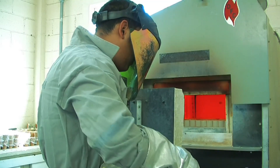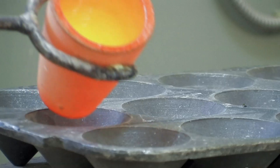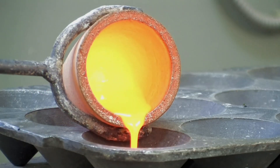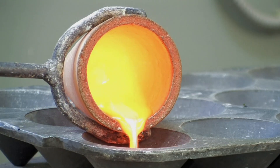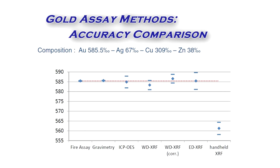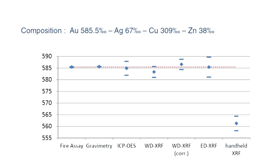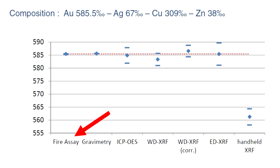Fire assay is the standard and classical analysis technique used in determining the precious metal content of silver and gold containing ore and secondary concentrates. Although it is more time consuming and elaborate than instrumental analysis, it is more reliable and accurate in most cases.